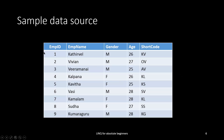Assume we are having a data source. We are going to implement this table in a generic list with employee ID, name, gender, age, and short code. These are the properties in the class, and these are the instances of the class.